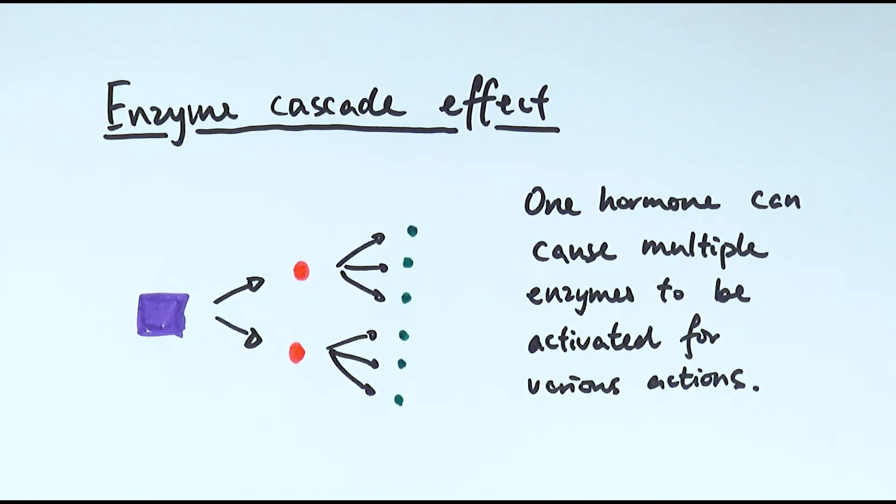That is why one single adrenaline will be able to signal multiple enzymes in the cell to convert glycogen to glucose, so the effect will take place a lot quicker. Whereas imagine if it's only able to make one single enzyme work, then you will need more or loads of adrenaline for that to work, and obviously that is inefficient and evolutionarily speaking it's not ideal.